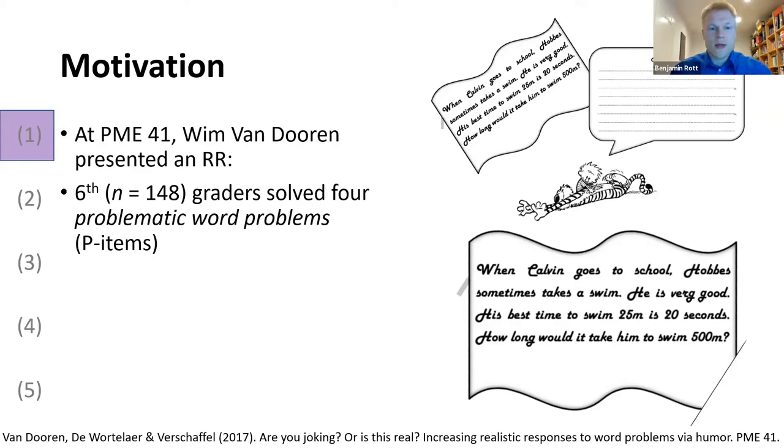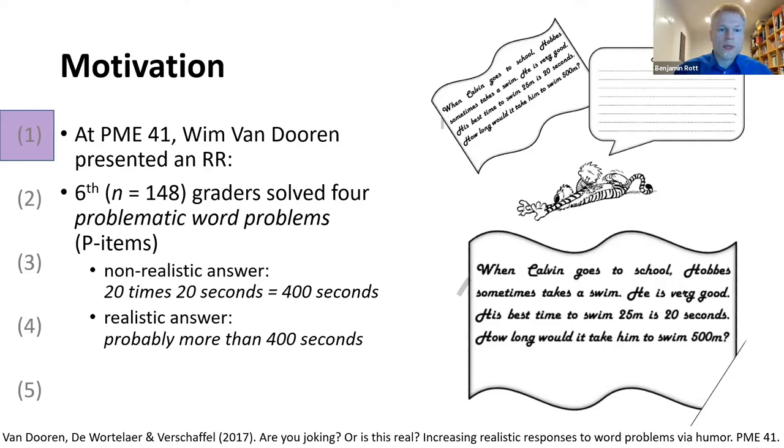And they expected the following: a non-realistic answer would be 20 times 20 seconds, so 400 seconds, whereas a realistic answer would be probably more than 400 seconds because he can't keep up the pace.